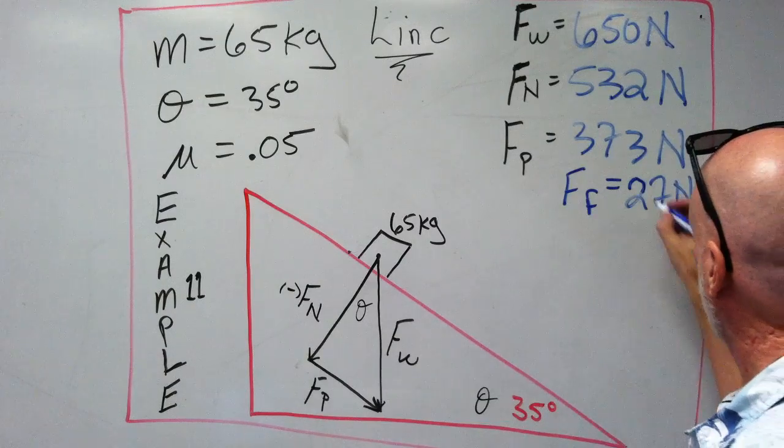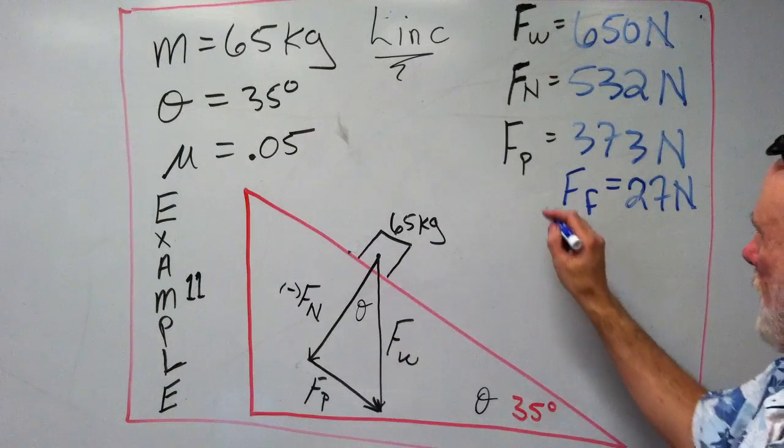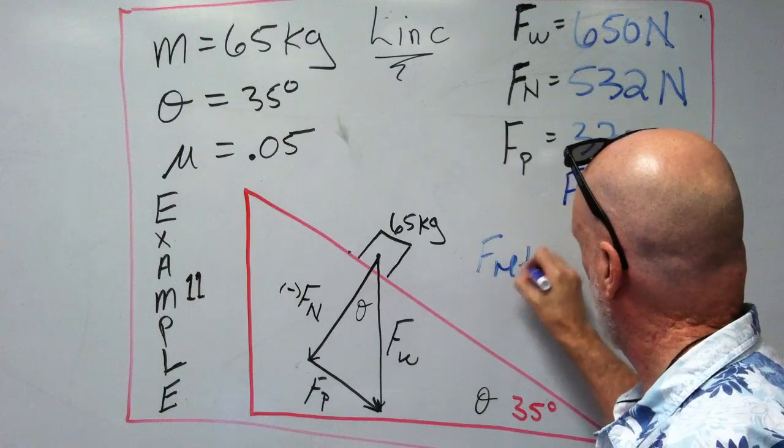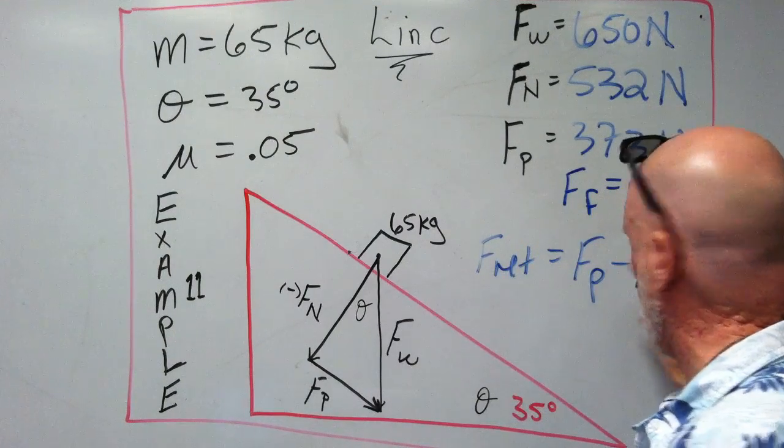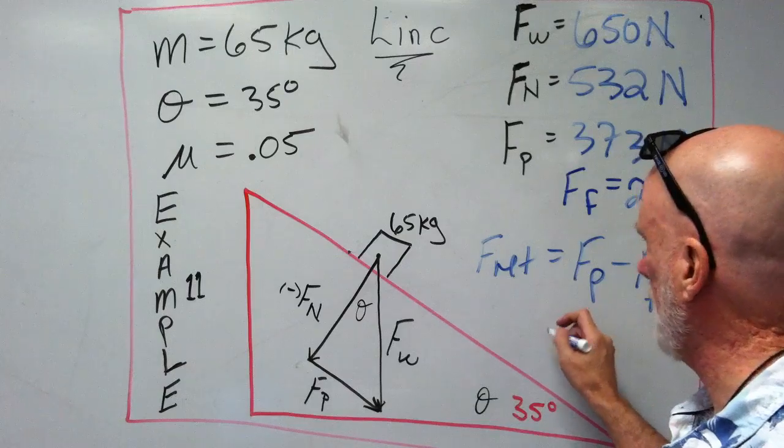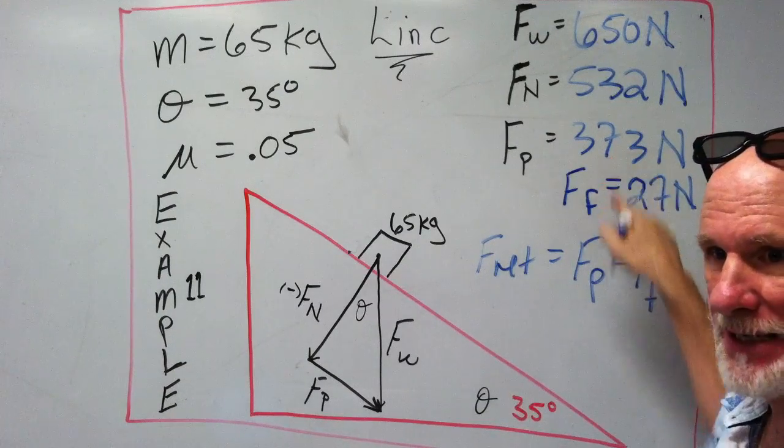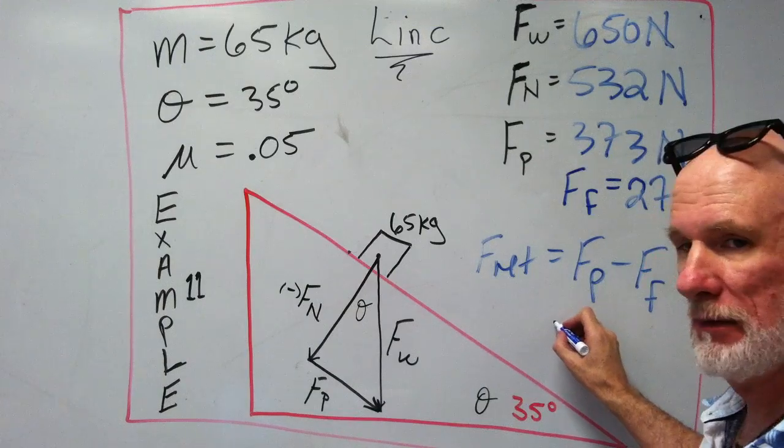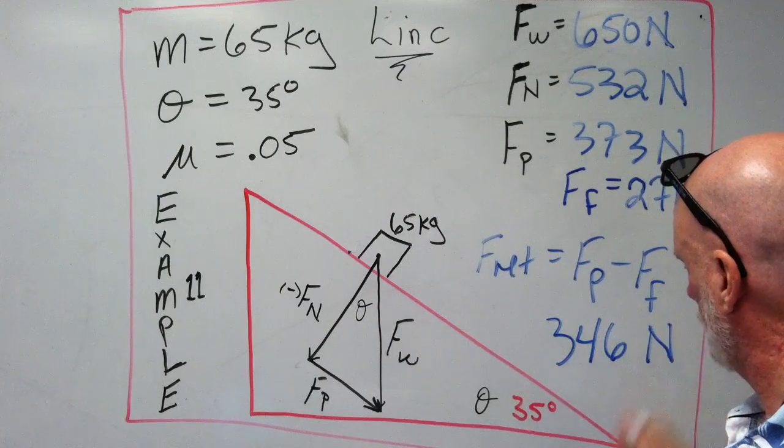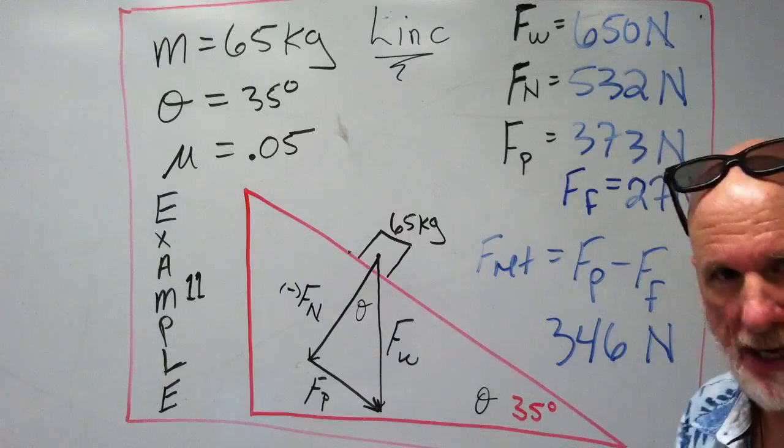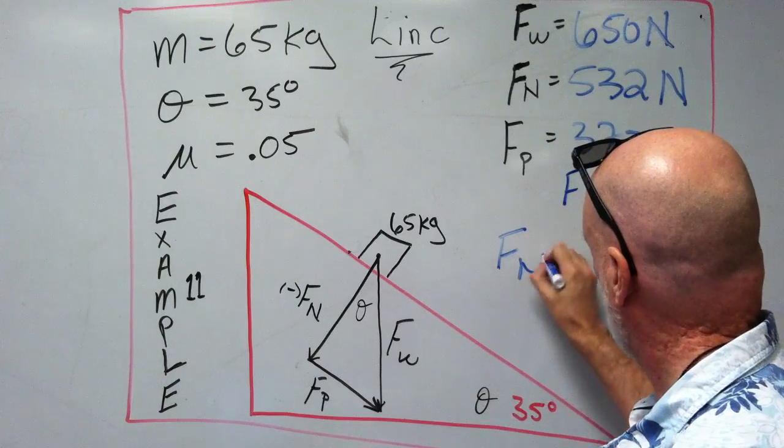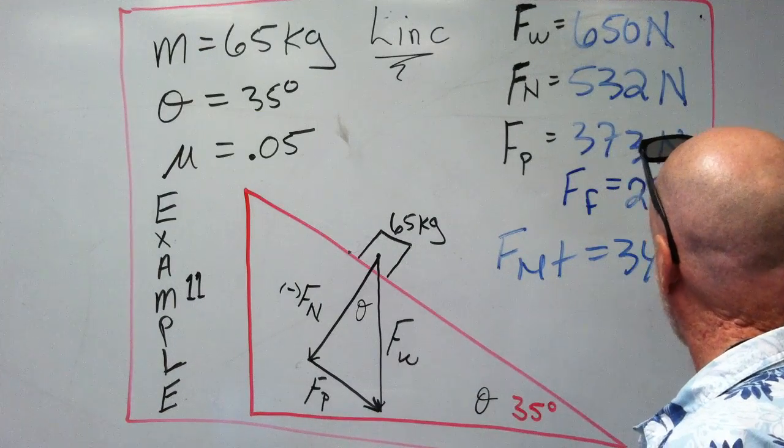Now, and that's going to be FF. Now, we know that F net, FP minus FF. FP minus FF. So that's going to be 373 minus 27 is going to be 346 newtons. 346 newtons. So my F net is 346 newtons.